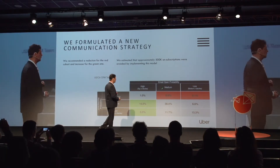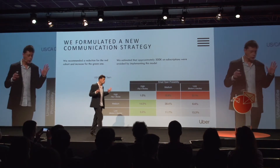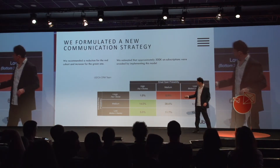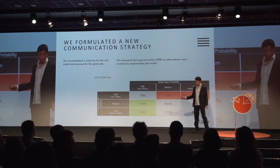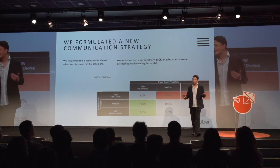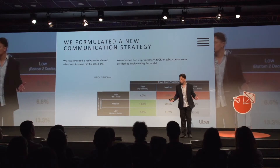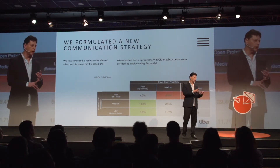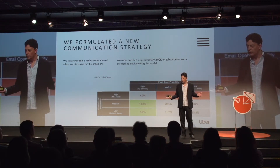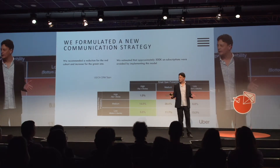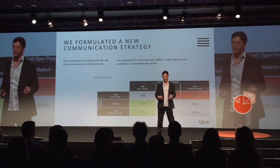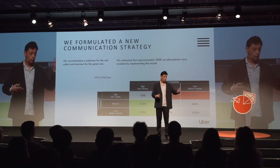Two things emerge almost immediately. Notice the cells in red: very high probability of unsubscription, and low to medium probability of opening the email. Intuitively, what do you do with those people? High probability to unsubscribe, low probability to open — decrease the frequency to that segment. I don't know the exact frequency, but I know who they are. I can identify them, and then we can try — we can do A/B tests and monitor over time because we know who they are.